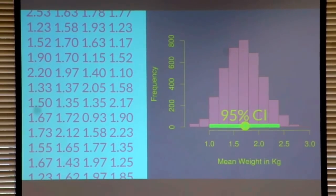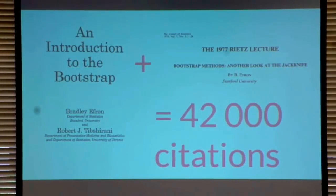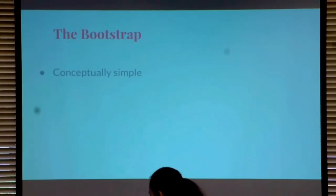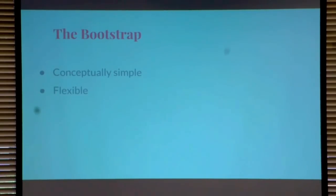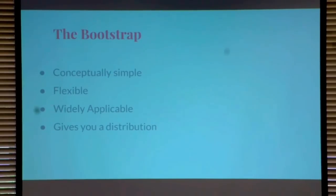So this was the classical non-parametric bootstrap, and it's a hugely popular method. The bootstrap is conceptually simple, easy to understand, easy to use. It's also very flexible — you can use it with any type of summary statistic, not only the mean, but the standard deviation or regression coefficients. And since it's so flexible, it's widely applicable. It gives you a distribution — a long list of numbers you can easily use to calculate confidence intervals or other derivatives.